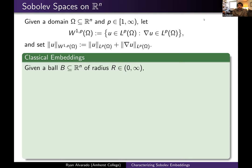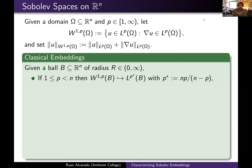To state it, suppose we have a ball with radius R. When p is less than n, W^{1,p} embeds into L^{p*}, meaning there's control over the L^{p*} norm of U in terms of the W^{1,p} norm. Here p* is given by the formula np divided by n minus p, sometimes called the Sobolev exponent.